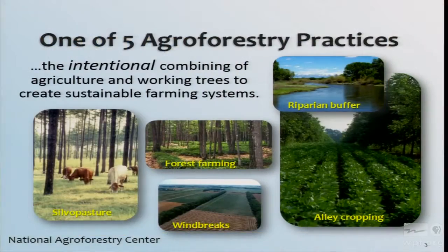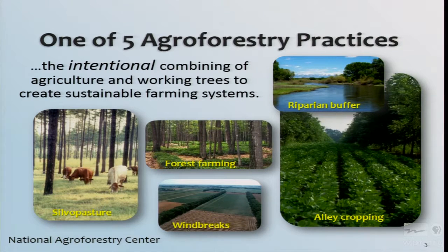You have to do it in a way that does a good job managing all three of those elements, and that's the challenge. The trees provide some long-term economic returns, and the livestock and forages give you some annual returns. Silvopasture is one of five agroforestry systems the USDA defines. The other four are windbreaks, riparian buffers, alley cropping, and forest farming. Silvopasture is the fifth one and the one we'll talk about most today.